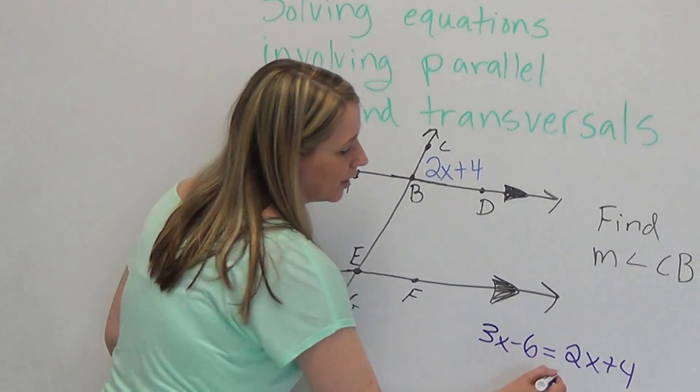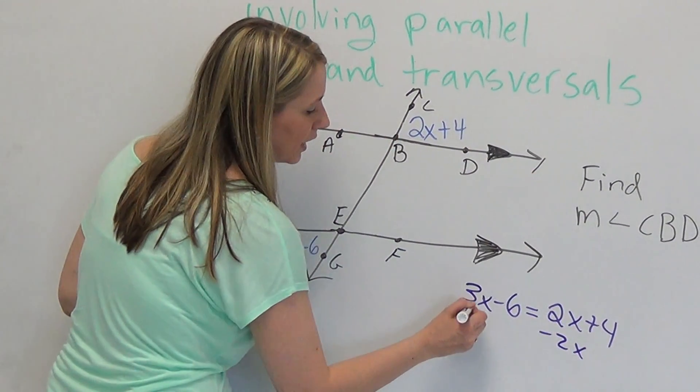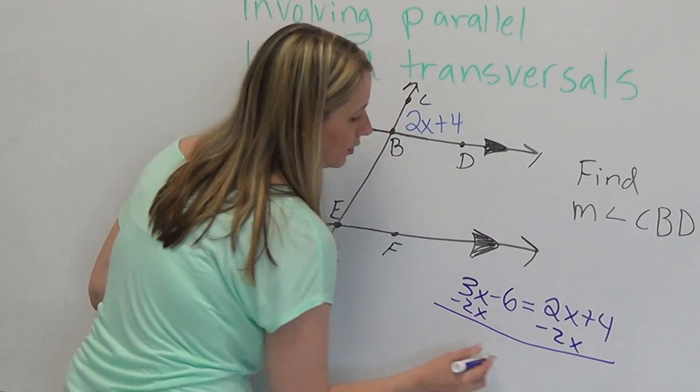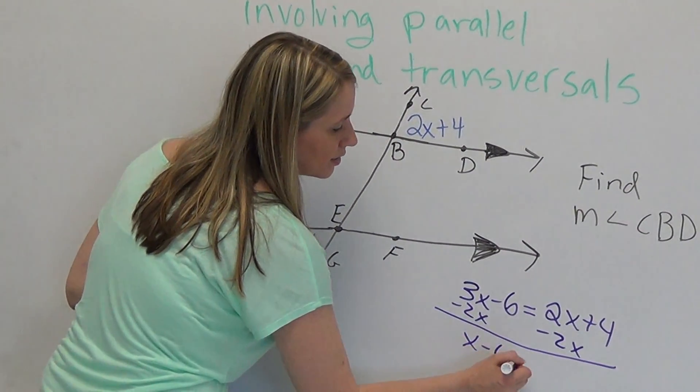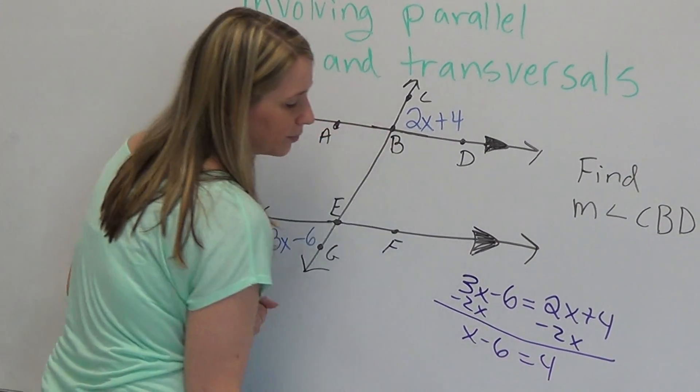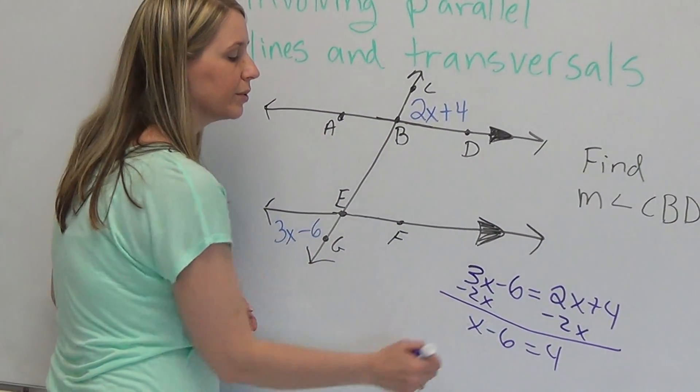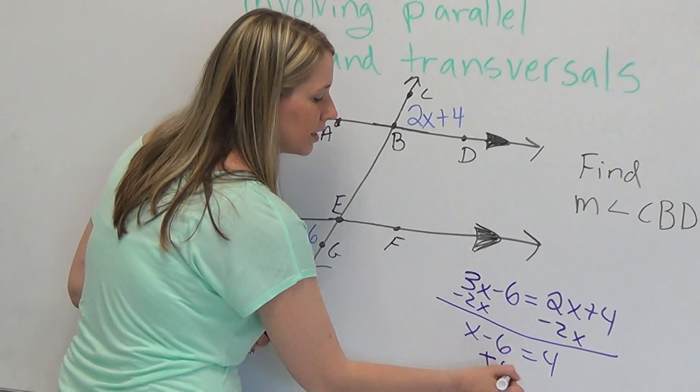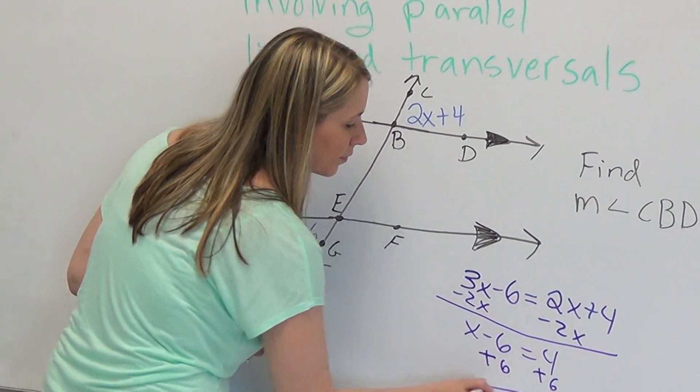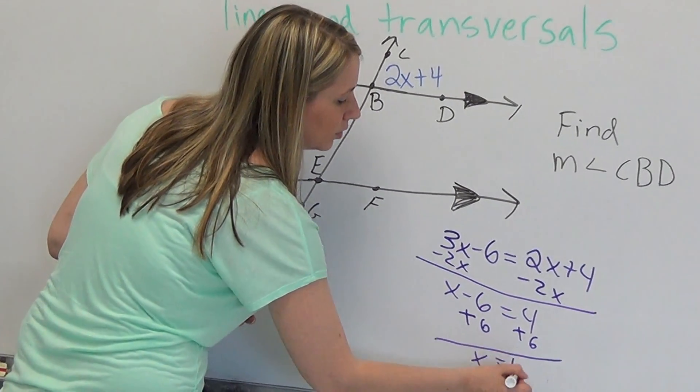Got to get rid of one x, so we subtract the 2x from both sides, and you get x minus 6 is equal to 4. Almost done, need to get rid of the 6. So we add 6 to both sides, and we get x is equal to 10.